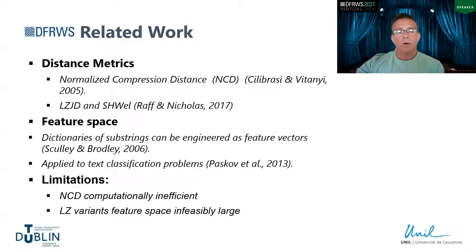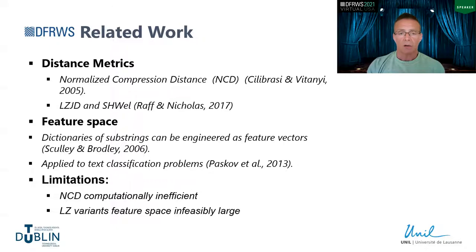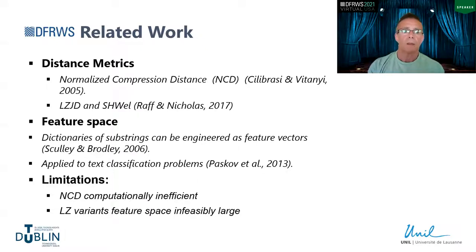In terms of prior work using compression, work has mainly concentrated on distance metrics — the main one being normalized compression distance or NCD — and LZJD. These have been shown to be effective across a wide variety of domains like text classification, navigation, genomics, virology, and even music classification. The LZJD and Schwell algorithms were based on the Lempel-Ziv compression algorithm and were shown to be particularly effective in the malware classification space.